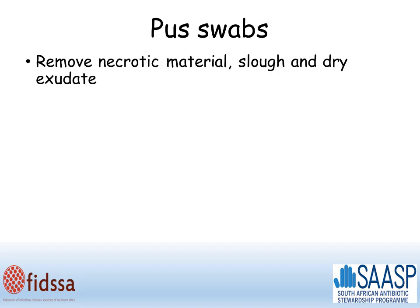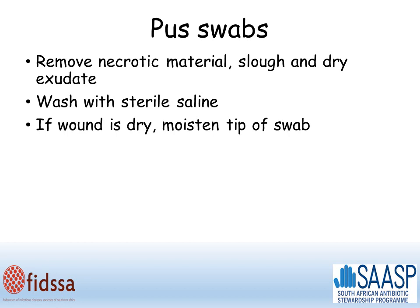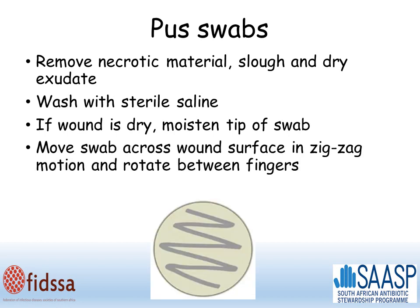To perform a pus swab, first remove necrotic material, slough and dry exudate. Wash the wound with sterile saline. If the wound is dry, you should moisten the tip of the swab. Then move the swab across the surface of the wound in a zigzag motion, rotating it between the fingers and applying a little downward pressure to remove exudate if the wound is a little dry.